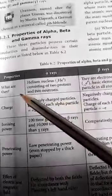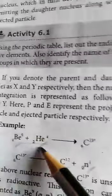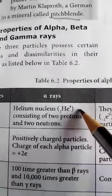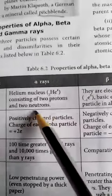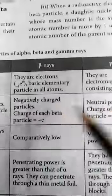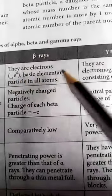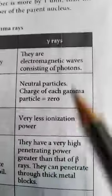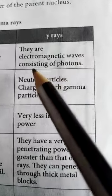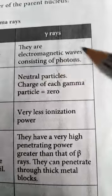Alpha rays consist of helium nuclei, consisting of two protons and two neutrons, with a mass number of 4. Beta rays are electrons, written as E with charge -1 — the basic elementary particle in all atoms. Gamma rays are electromagnetic waves consisting of photons.